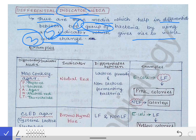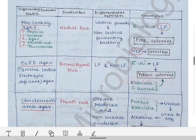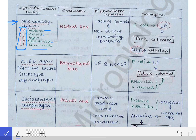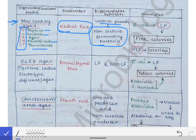The first example of differential and indicator media is MacConkey agar. There is a famous mnemonic — PLANT — for its constituents: P for peptone, L for lactose, A for agar, N for neutral red, and T for taurocolate. The indicator used in MacConkey agar is neutral red, and it differentiates between lactose fermenting and non-lactose fermenting bacteria.